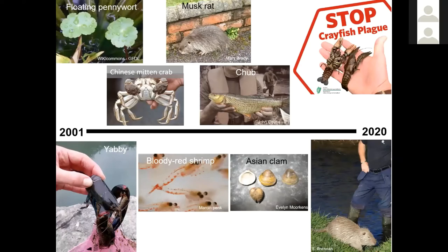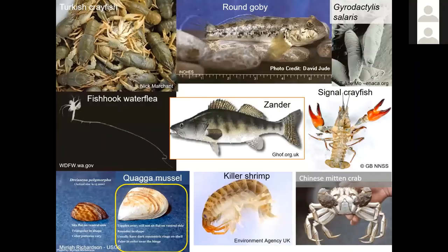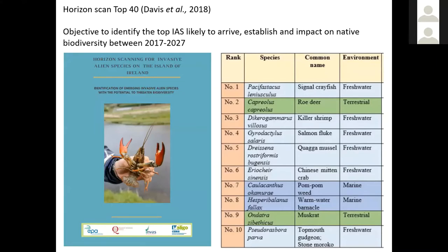There are species first recorded or re-recorded in Ireland in the last 20 years related to aquatic and semi-aquatic environments, some established and widespread, others just individual occurrences. Species are also predicted to arrive in future. Back in 2017, Davis et al. conducted an extensive workshop to identify the top species likely to arrive, establish, and impact biodiversity in Ireland between 2017 and 2027. Of the top 10 most likely to arrive and cause impact, six are freshwater species — really raising concern about the ongoing and future threat.